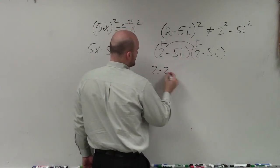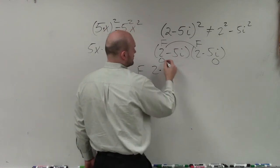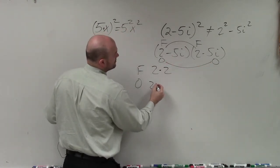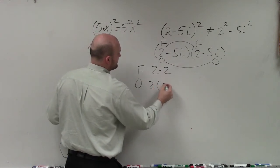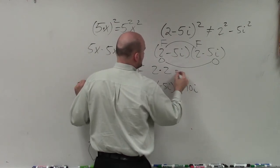So that'd be 2 times 2, which equals 4. Then we multiply the outer terms, which would be 2 times negative 5i, which is going to leave us with negative 10i.